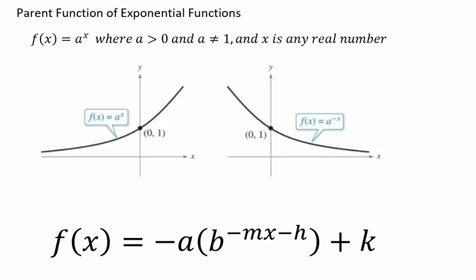So notice here that we have a graph where we have f(x) equals a raised to the x, and a crucial point here is this (0, 1). That point will always be there.